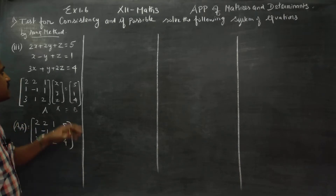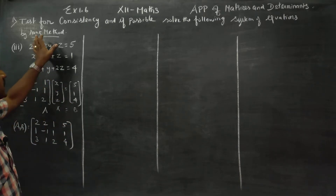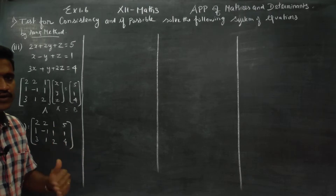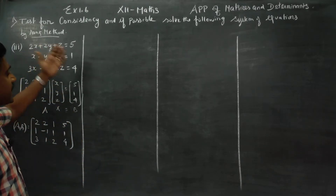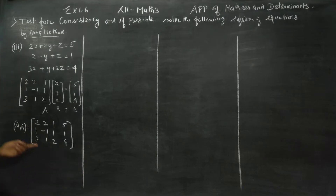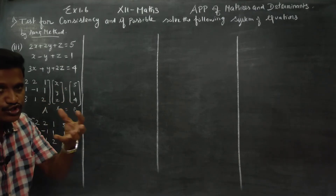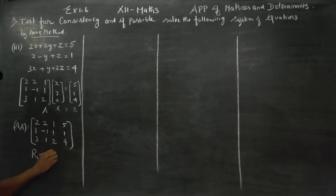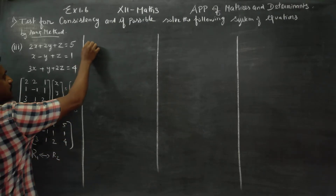Now, to find the rank using the row reduction method, we follow row reduction. When finding the rank using row reduction, it is comfortable to start with the number 1 at the top. So I am going to interchange R1 with R2.